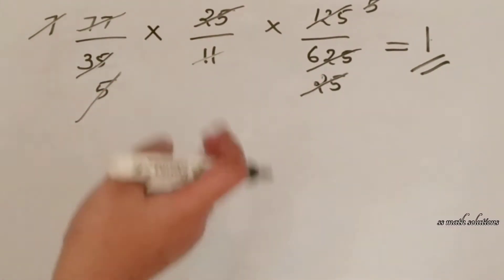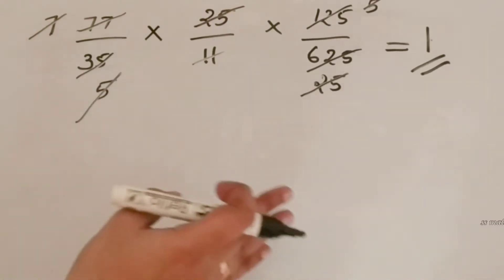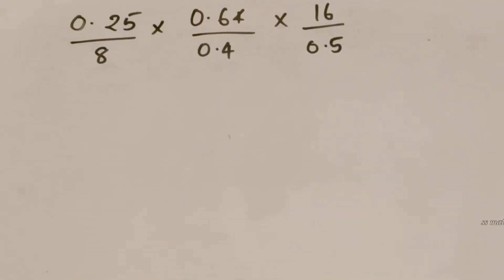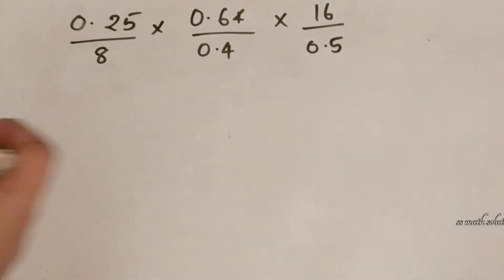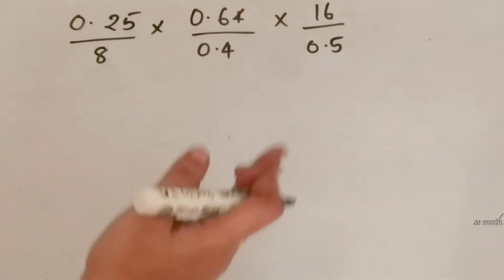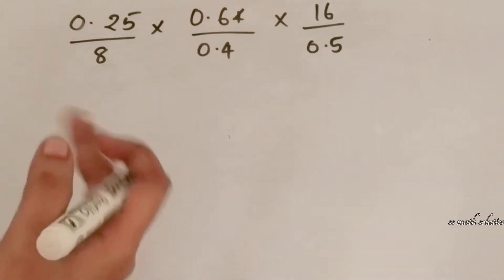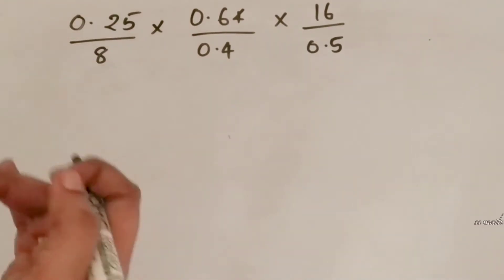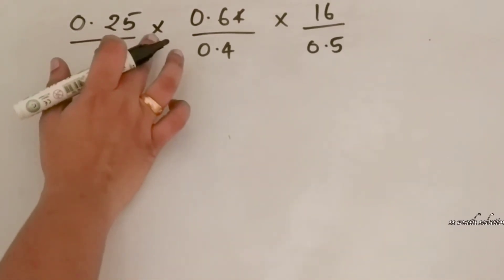You can cancel with big or small numbers — cancellation by division is very easy. Now let's check another example: 0.25/18 × 0.64/0.4 × 16/0.5. This has a mix of decimals and whole numbers. You can either cancel the decimals directly if they divide nicely, or remove the decimals first, which is the easier approach.